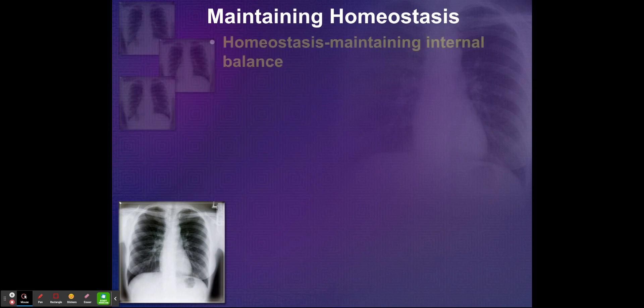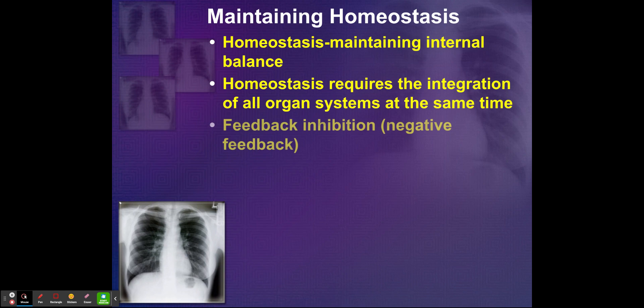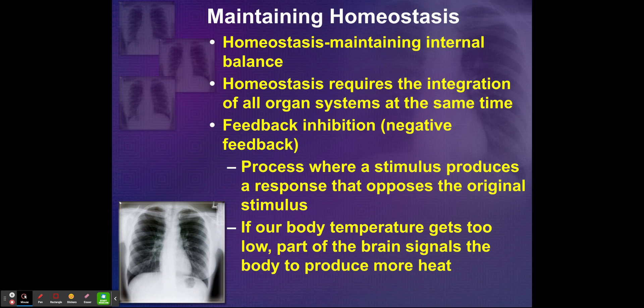Maintaining homeostasis — homeostasis is the maintaining of internal balance. Homeostasis requires the integration of all organ systems at the same time. Feedback inhibition, also known as negative feedback, is a process where a stimulus produces a response that opposes the original stimulus. If our body temperature gets too low, part of the brain signals the body to produce more heat — so it's self-regulating.